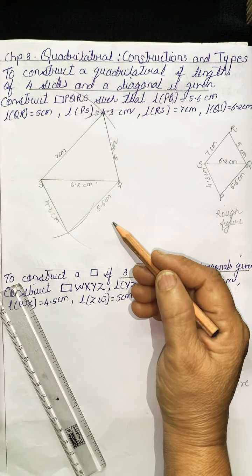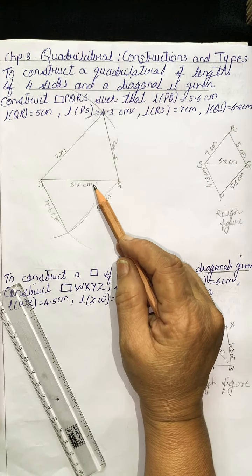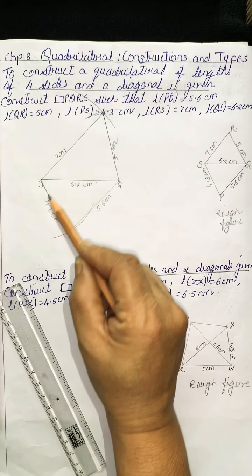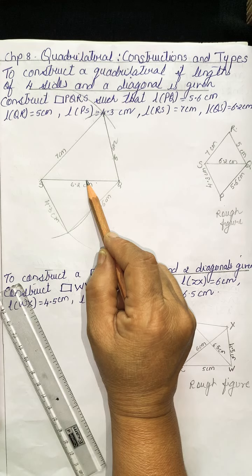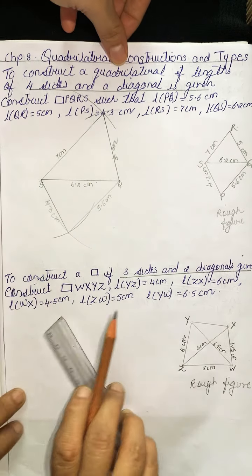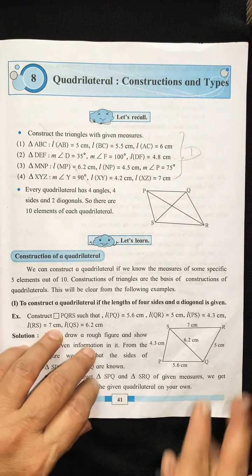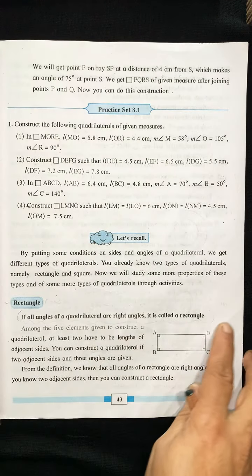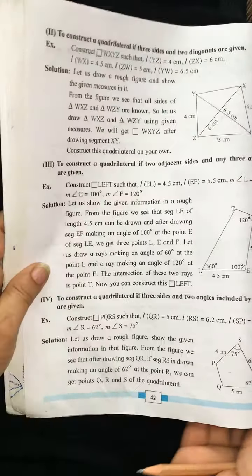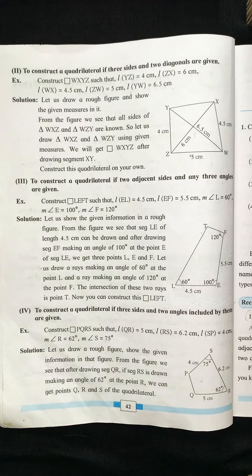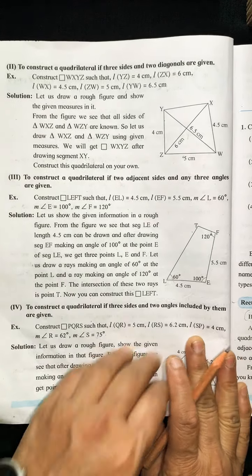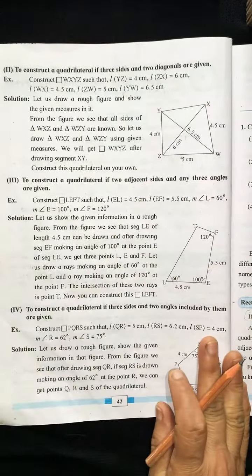I hope you have followed the first construction in which 4 sides and 1 diagonal are given. Now let us move on to the second type of construction: to construct a quadrilateral if 3 sides and 2 diagonals are given.